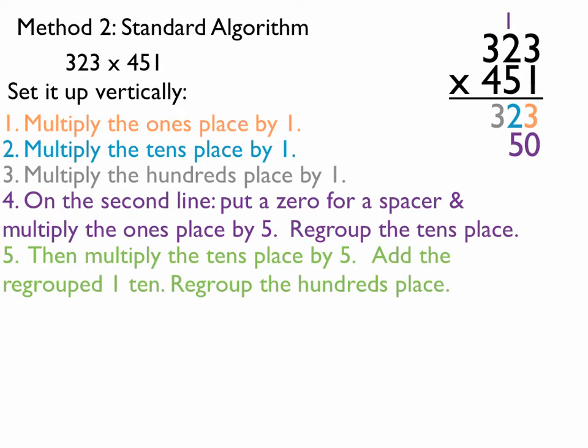Now, we multiply the tens place by 5 and add the regrouped 1 ten. So, 5 times 2 is 10. Plus 1 makes 11. In 11, there is 1 one and 1 ten. So, I'm going to regroup that in the hundreds place. Like so.